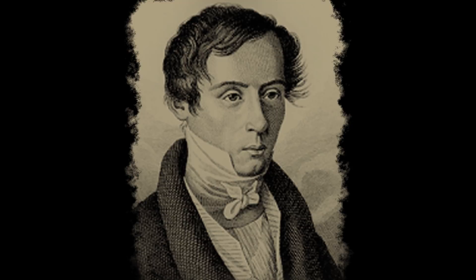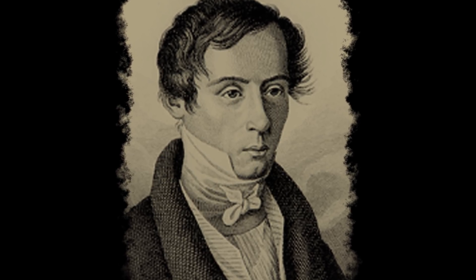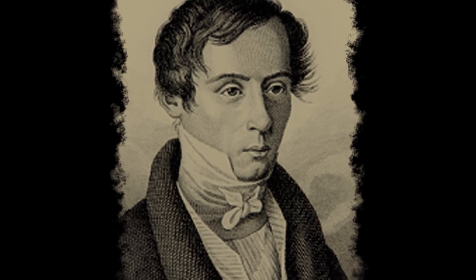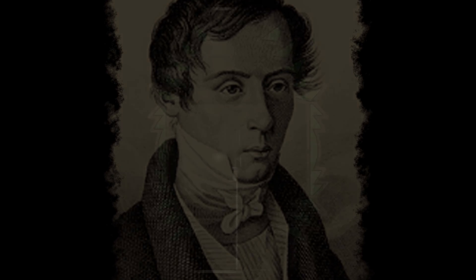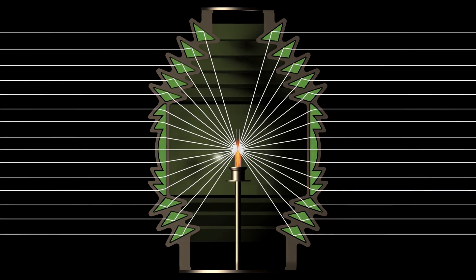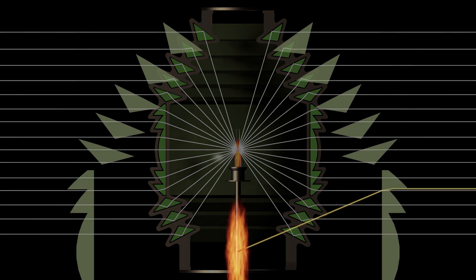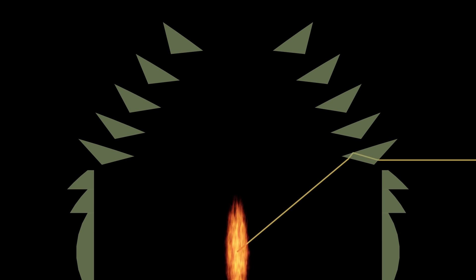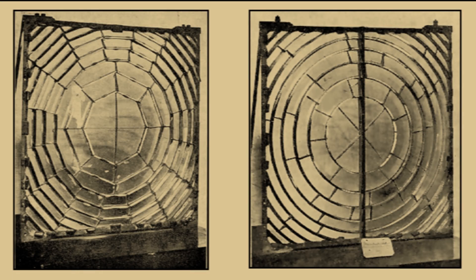In 1819, Augustin Fresnel revolutionized lighthouse illumination by inventing and designing a series of lenses and prisms that collected and magnified light from a single light source and directed it seaward. His early bullseye lens design was constructed of segmented straight pieces of glass and evolved to curved segments.